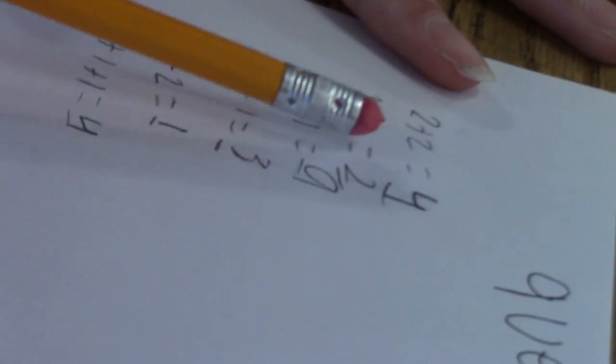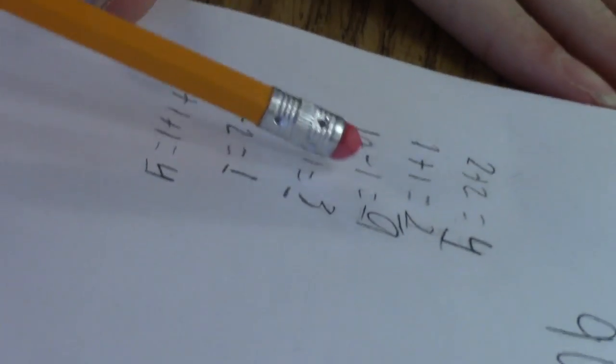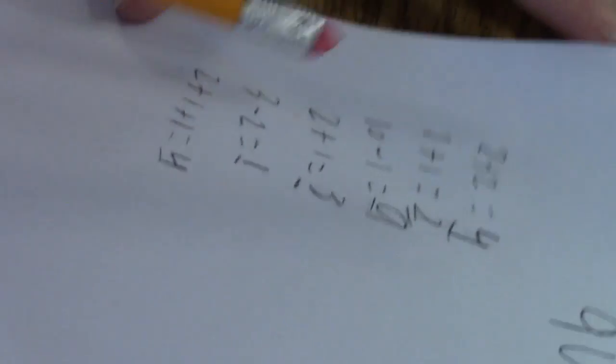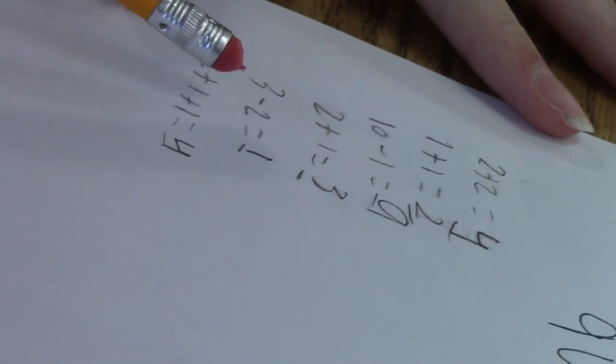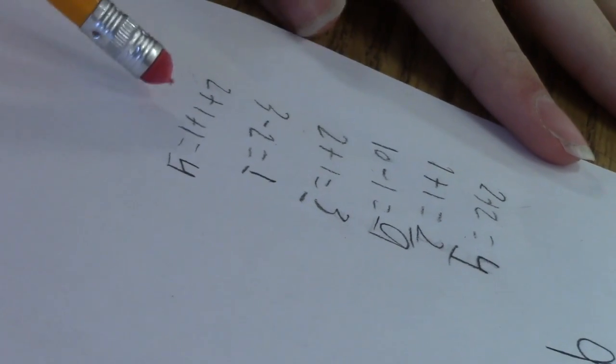2 plus 2, that does equal 4. 1 plus 1, that does equal 2. 10 minus 9, that is 9 - or 10 minus 1, sorry about that, I misspoke. 2 plus 1, that equals 3. 3 minus 2, that does equal 1. 2 plus 1 plus 1, that's 4. Now you can see all of this is correct.